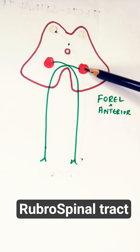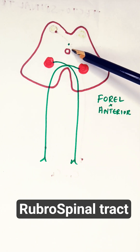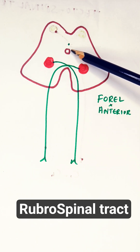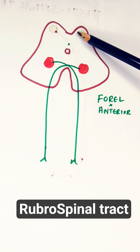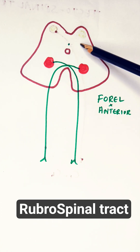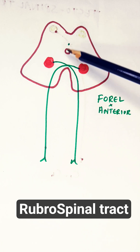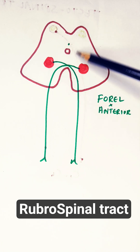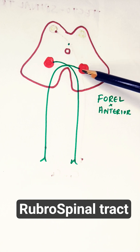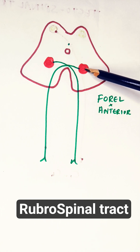Where exactly is this red nucleus present? In the midbrain, we have a canal called the aqueduct. Just behind the aqueduct, this area is called the tectum. In front of the aqueduct, the area of the midbrain is called the tegmentum. The red nucleus is located in the tegmentum of the midbrain.